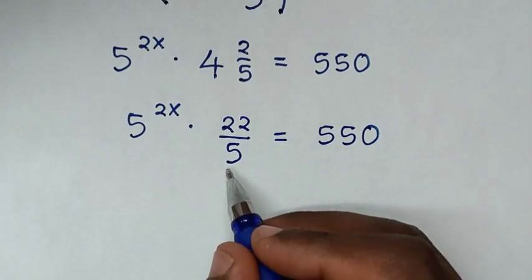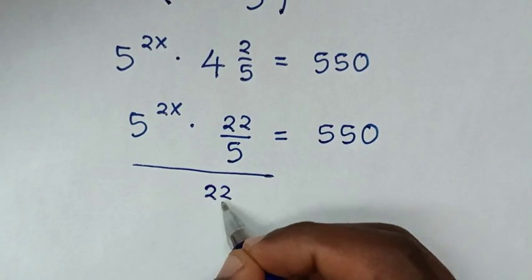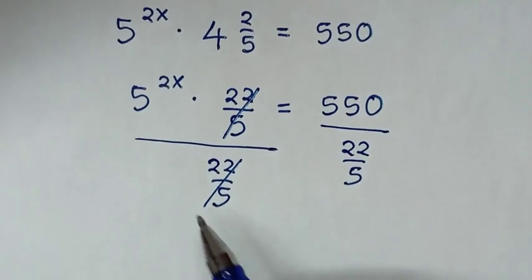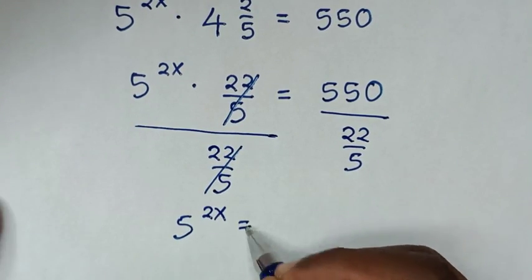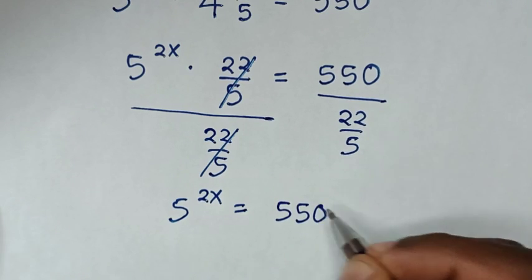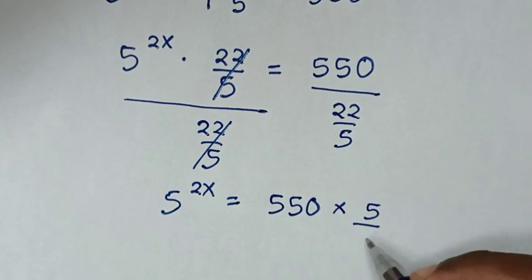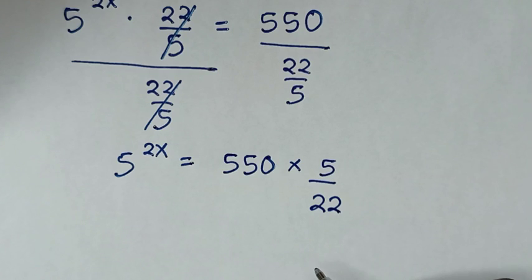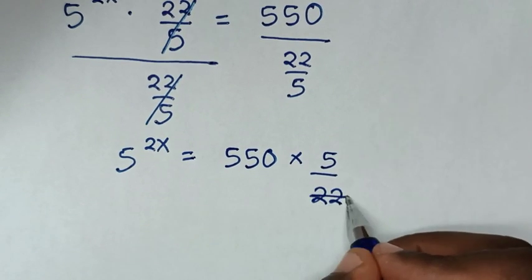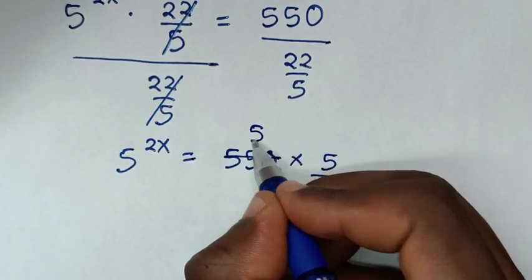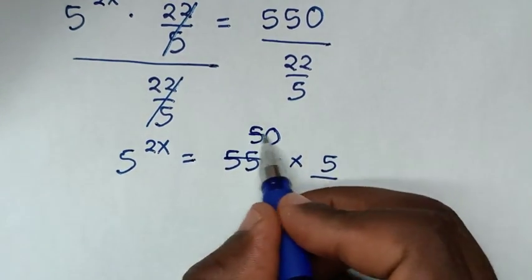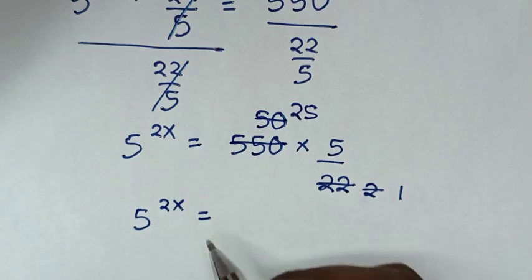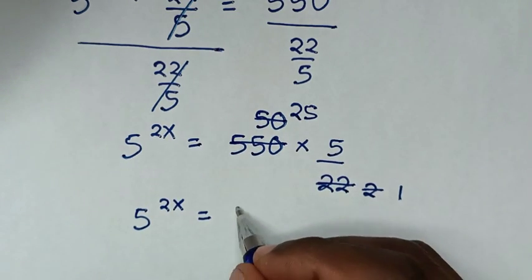Then we make like terms together, so we divide both sides by 22 over 5. This and this will cancel, then it will be 5 power 2x is equal to 550. Dividing by 22 over 5 is the same as multiplying by 5 over 22, the reciprocal. So it will be 5 power 2x times 5 is 25, giving 5 power 2x is equal to 25 times 5, which is 125.